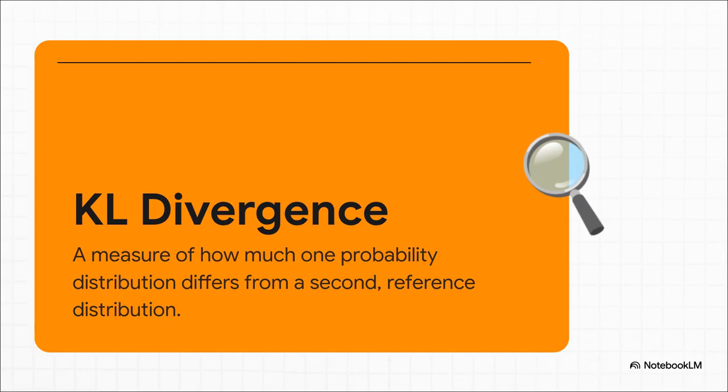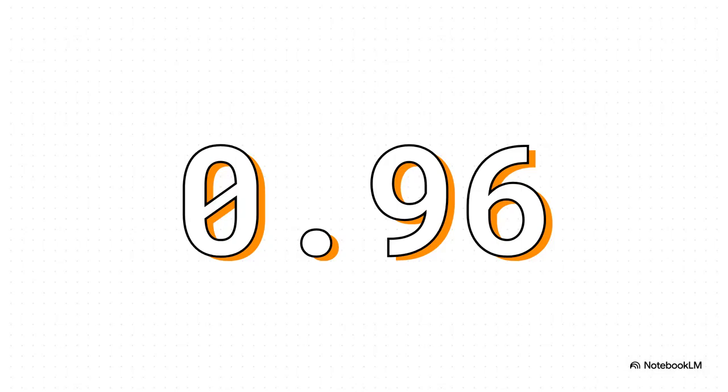comes from a concept in information theory called KL Divergence. Now don't let the name scare you. It's actually a pretty intuitive idea. Think of it as a measure of surprise. If your original model had a certain way of behaving, KL Divergence just measures how much the new model's behavior has shifted away from that. The bigger the shift, the more surprising its new answers are and the higher the KL Divergence. And this, this is the aha moment.